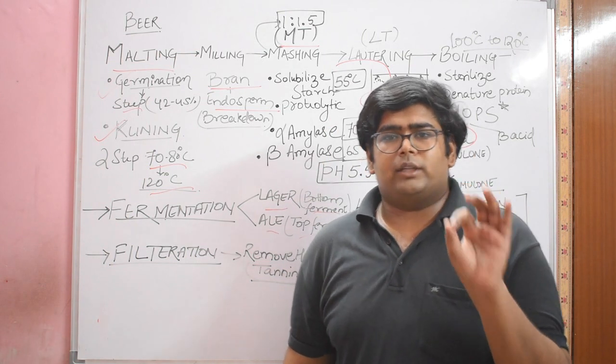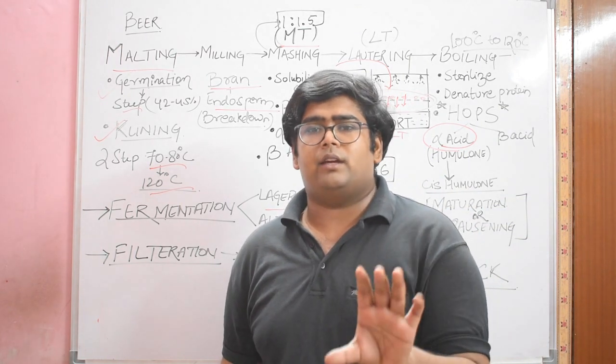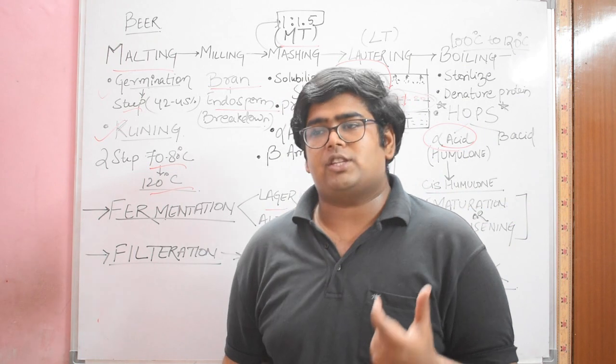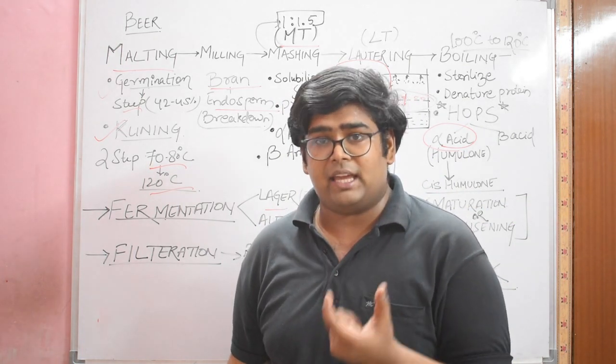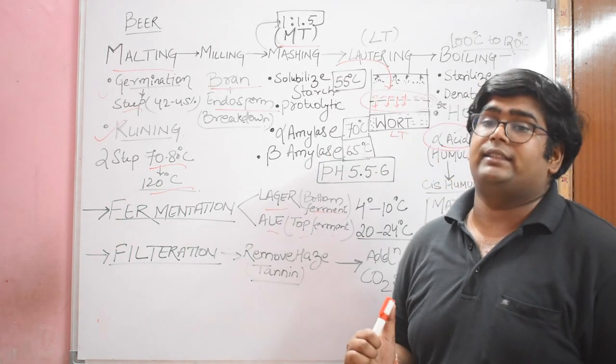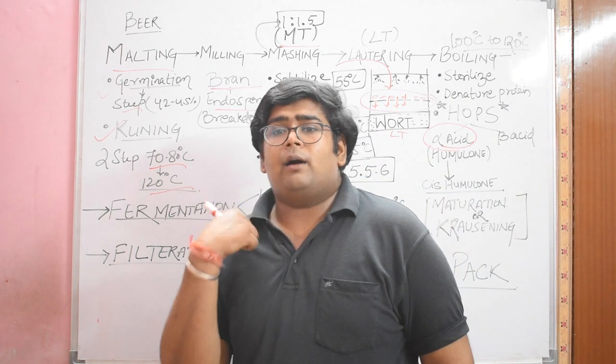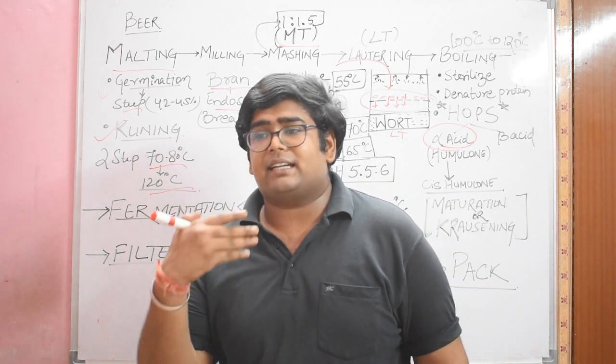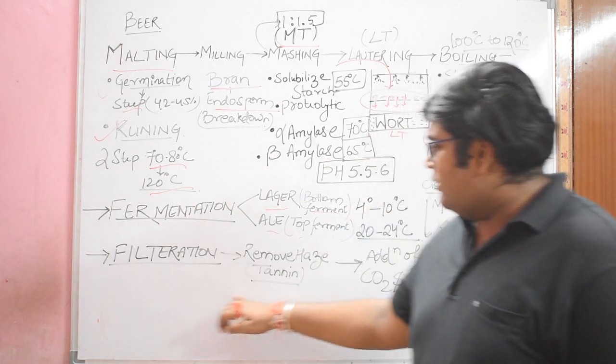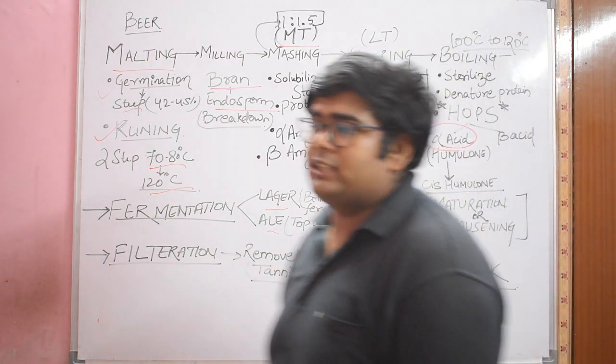You must be knowing that beer is served chilled. The most preferable temperature for serving a beer is 4 degree centigrade. At this temperature, there is a thing which occurs called the chilling haze. This haze is created by tannins and polyphenols. Now what we do is we will filter the beer and remove all those tannins and haze producing agents.